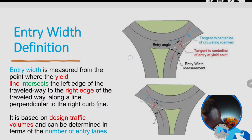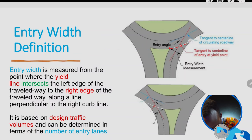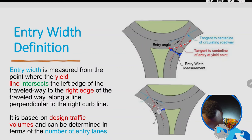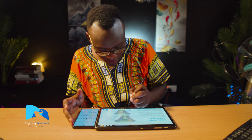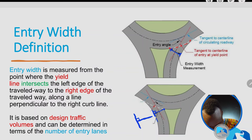In demonstration, we have the yield line here, and the entry width is what's shown here. If you're driving on the left-hand side, you draw it from where the yield line starts and you draw it as a tangent — this is at 90 degrees. This width gives the entry width.